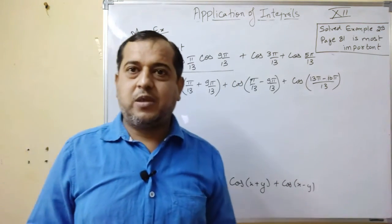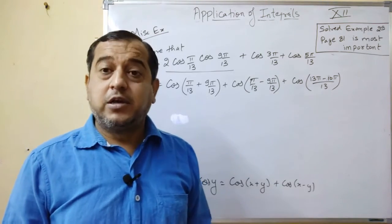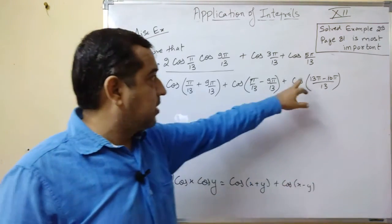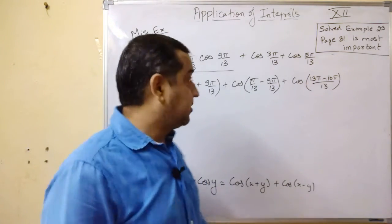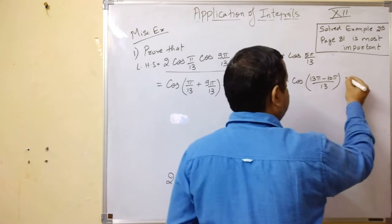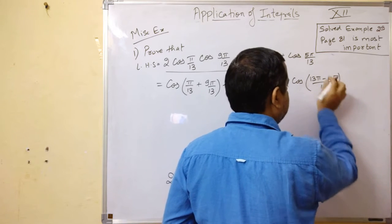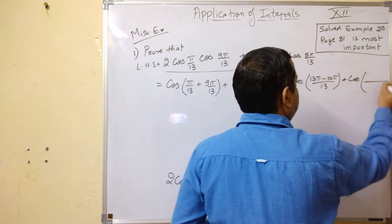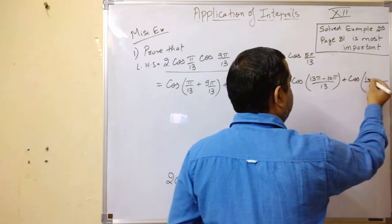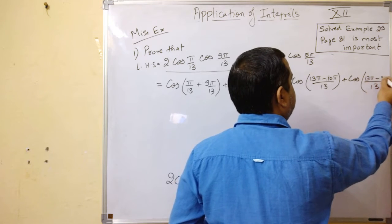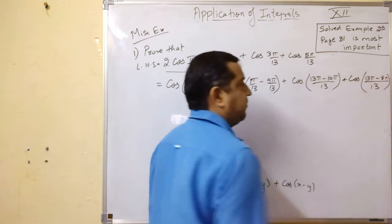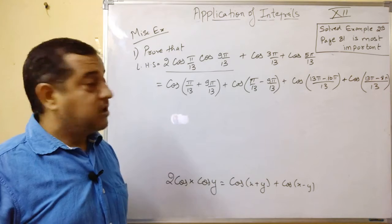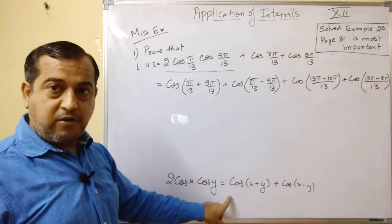3π by 3π. So we can write this as 13 minus 10. Again, this 5 can be written as plus cos of upon 13. So 13π minus 8π. We can write it this way.